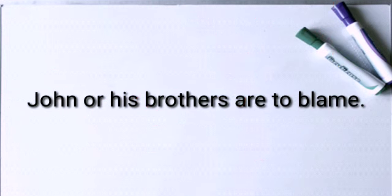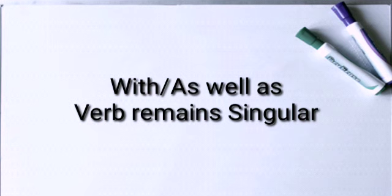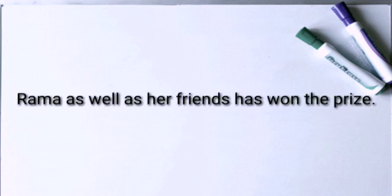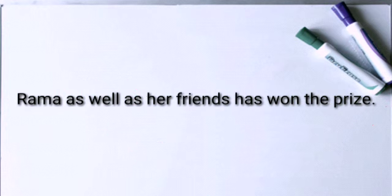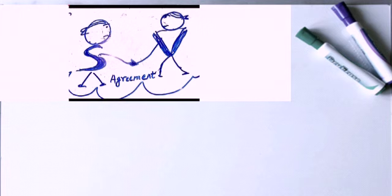If two nouns are joined by 'with' or 'as well as,' the following verb agrees with the first noun. For example: 'Rama as well as her friends has won the prize.' Rama and her friends are connected with 'as well as,' so the following verb is singular, despite the fact that the second noun 'friends' is plural. When connecting with 'with' or 'as well as,' the verb should always be singular, agreeing with the first noun.